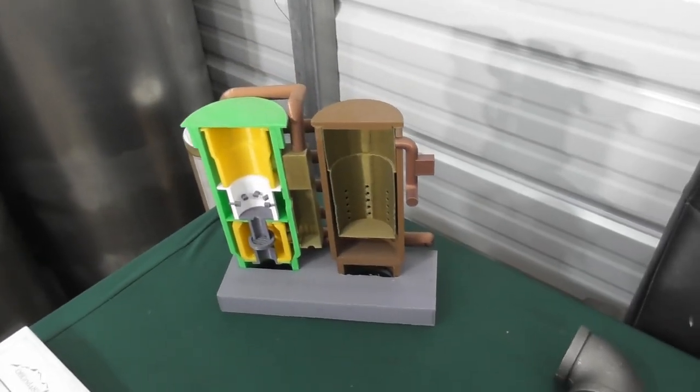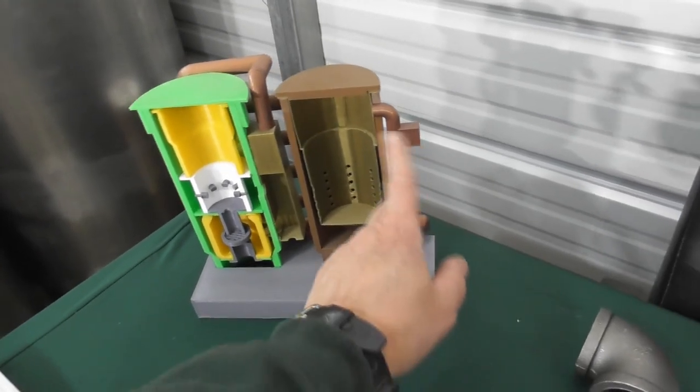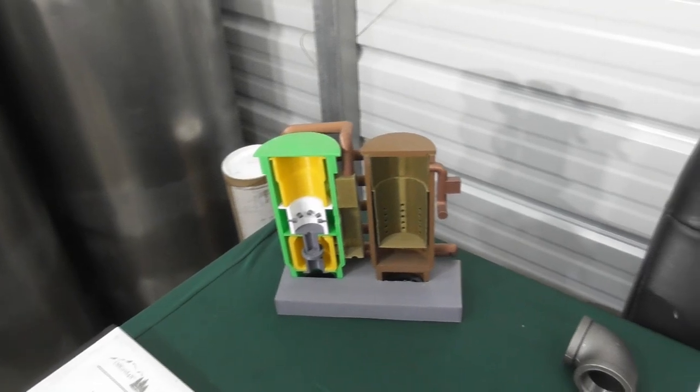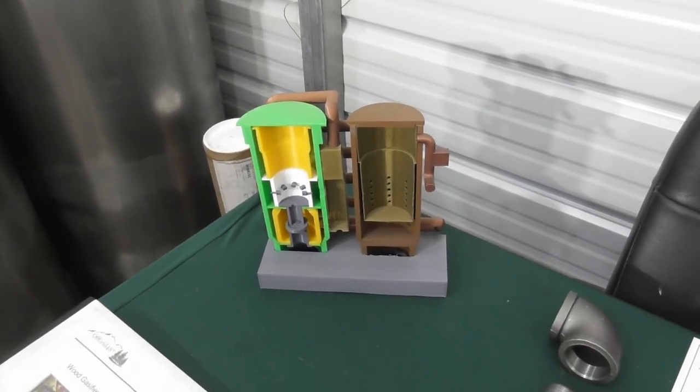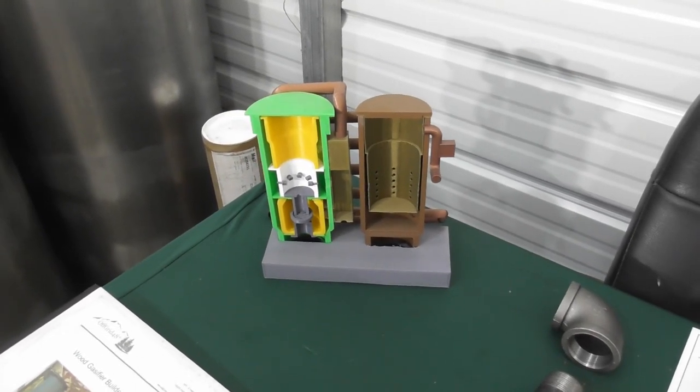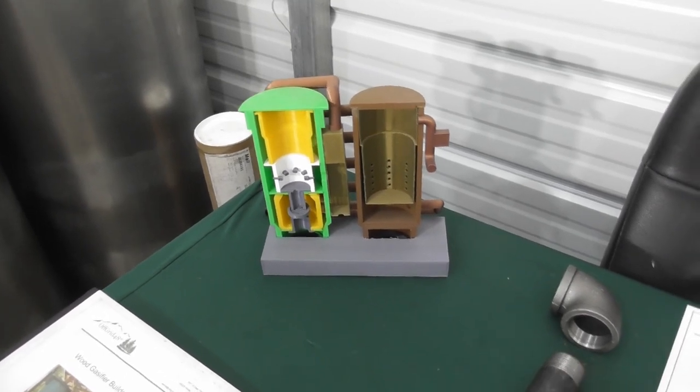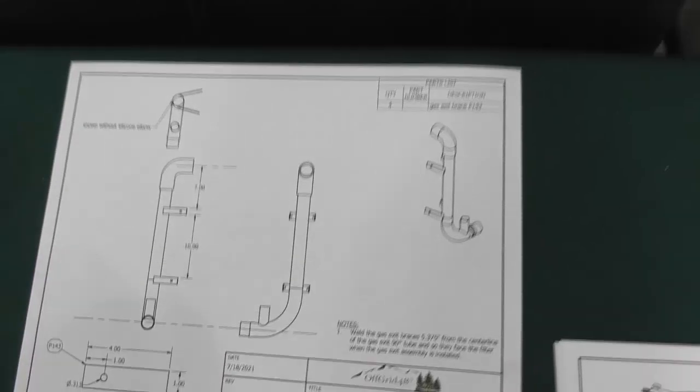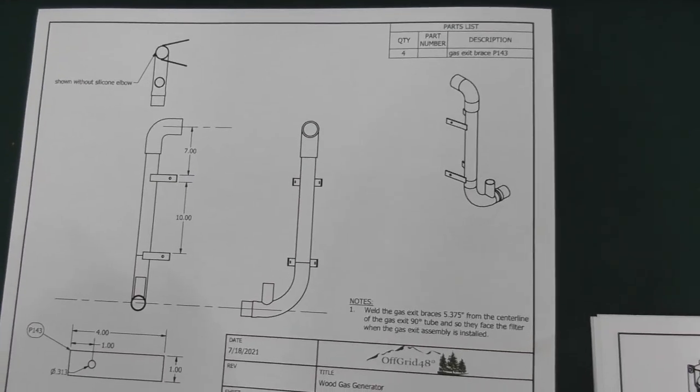So basically that's the assembly that attaches to the outside of the filter tank that has all the gas that's cooled and filtered that's now ready for use. It goes to the flare and it also goes to your application such as engine or heating. So the relevant assembly drawings we've got here, you can see the basic assembly.